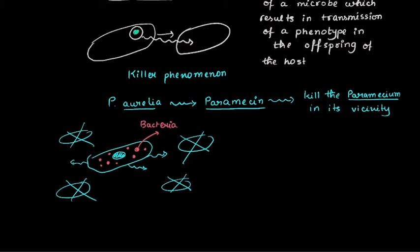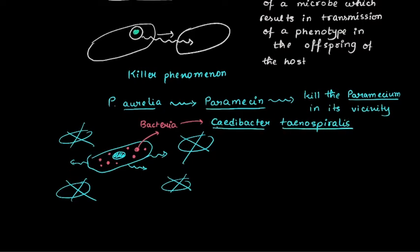These bacteria are using the paramecium as a host and deriving nutrients from it. The name of the bacteria is Caedibacter taeniospiralis. This bacteria is residing inside the paramecium and is secreting the toxin that is killing the paramecium in its vicinity.